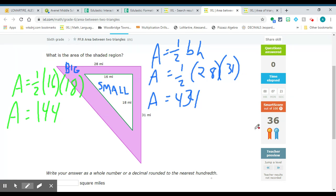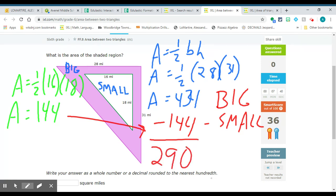So, I'm going to do big minus small. So, 434 minus 144, and I would get 290. This is my actual area, and that would go in here.